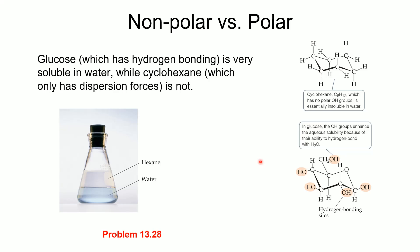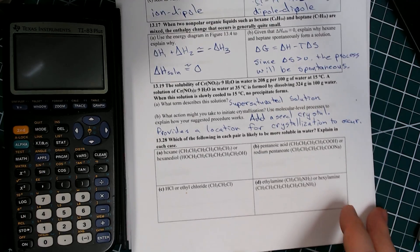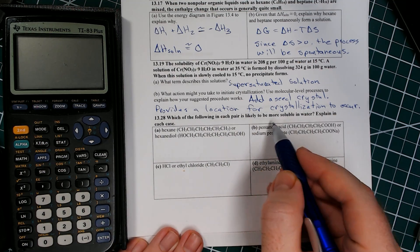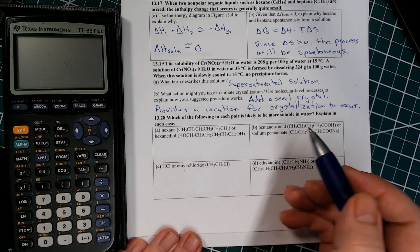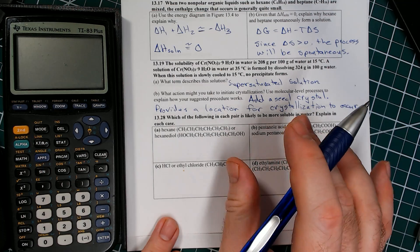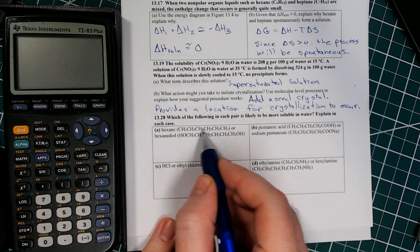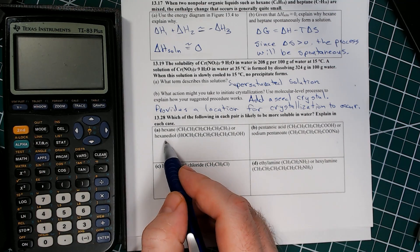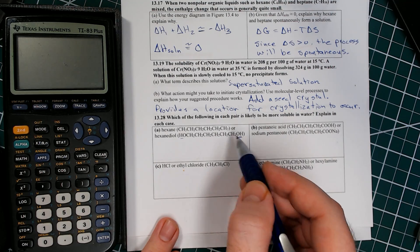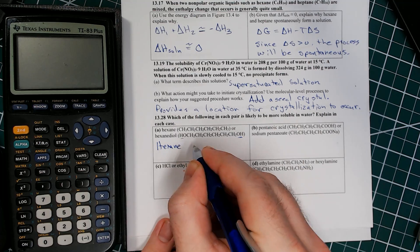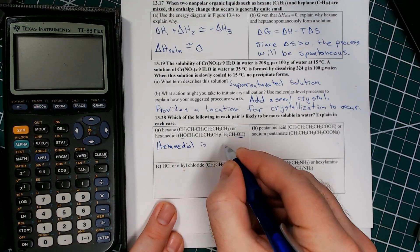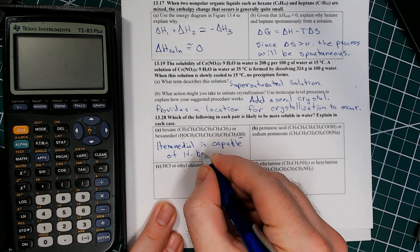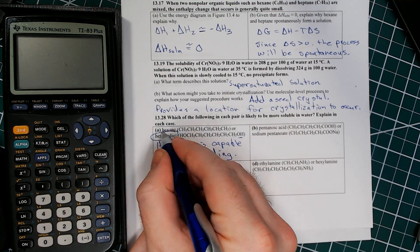Let's look at number 28: indicate which of the following in each pair is likely to be more soluble in water. For hexane versus hexane diol, you can tell right away that hexane diol is going to be more soluble in water because it has these OH groups — hexane diol is capable of hydrogen bonding.